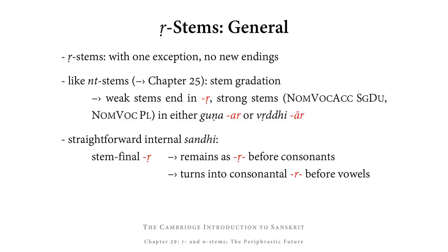First of all, vocalic R stems. As far as their endings are concerned, these are completely straightforward for us because, with one exception, we already know all the endings that R stems use. Like NT stems, which we were introduced to in chapter 25, they have stem gradation, meaning they have a weak stem and a strong stem.